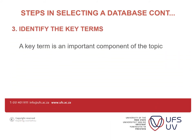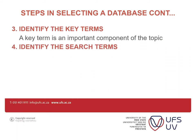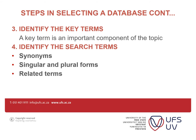When you are given a topic, you have to break it down into keywords. A keyword or key term is an important component of the topic. You use those keywords to do your search. It is important to build your vocabulary by knowing synonyms, related terms, narrow terms, and broader terms. You might use a particular term and not get the results you are happy with, so you can use a related term. For instance, if you are searching for towns and don't get relevant results, you might use cities instead, as towns and cities are related terms.